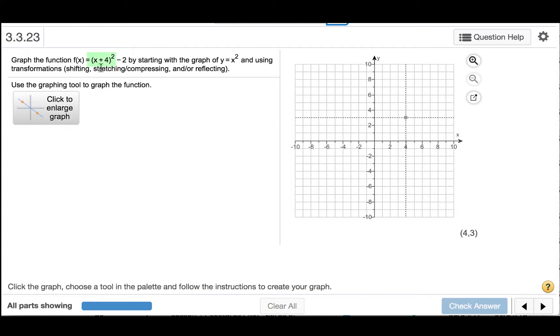We can see in this function that we are adding 4 to x. Whenever we add to x, it shifts the graph to the left. So we will take the graph of y = x², which is just a parabola with the vertex at the point (0,0), and shift it to the left 4 units.